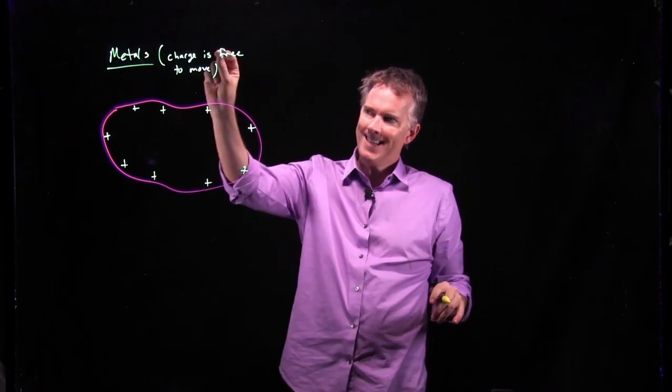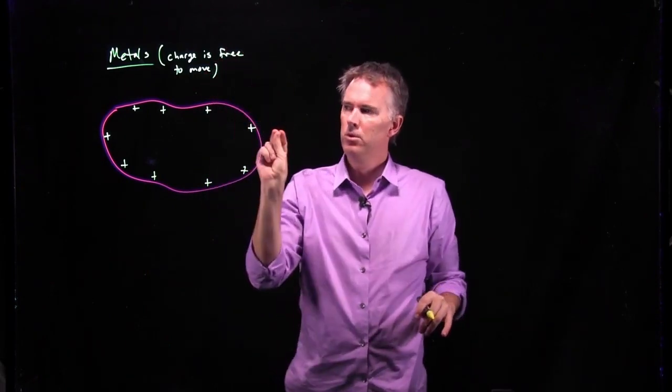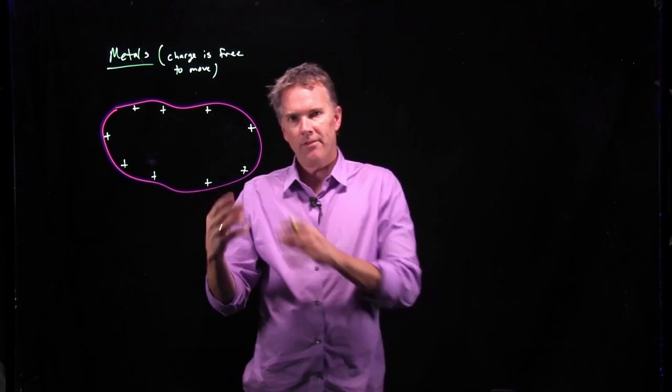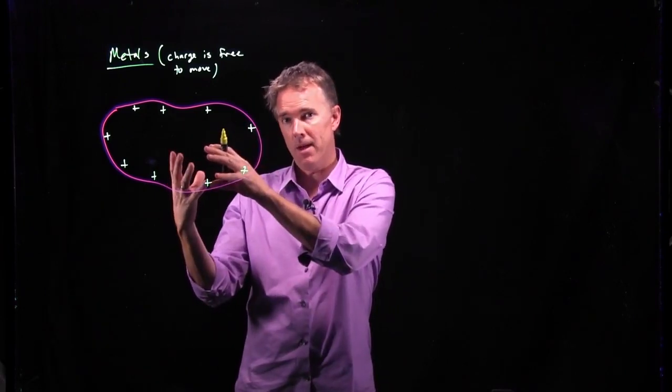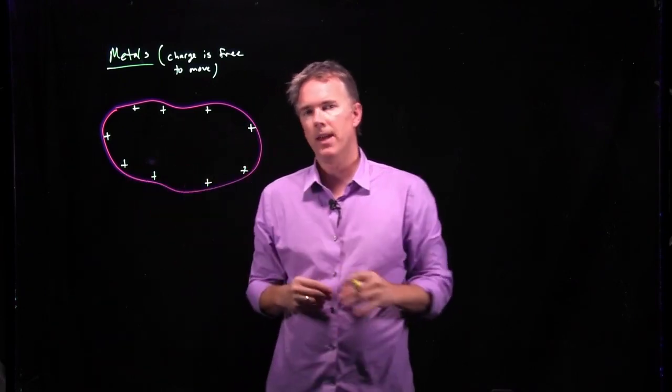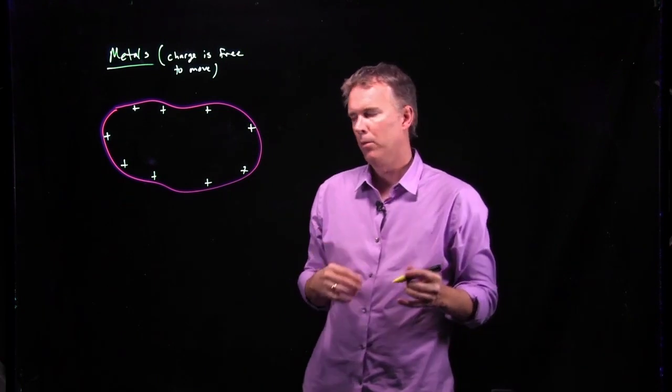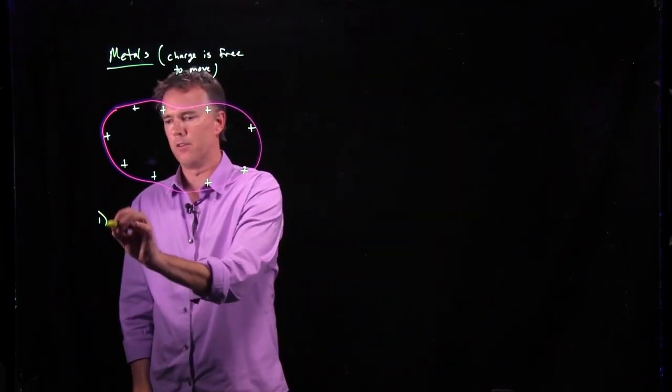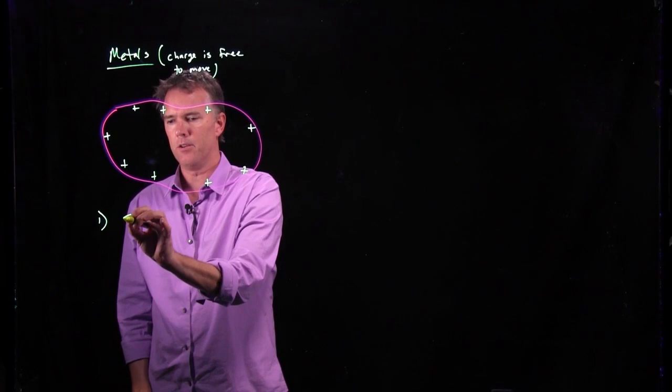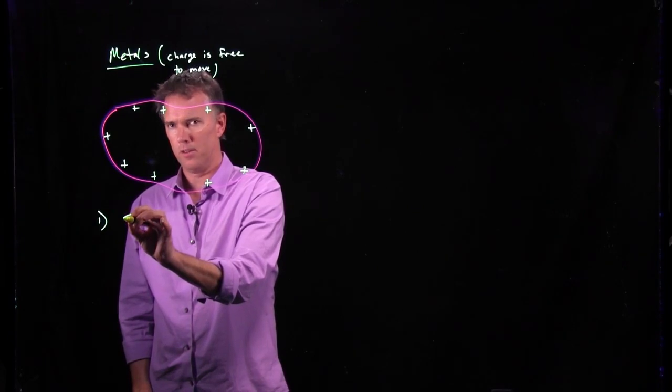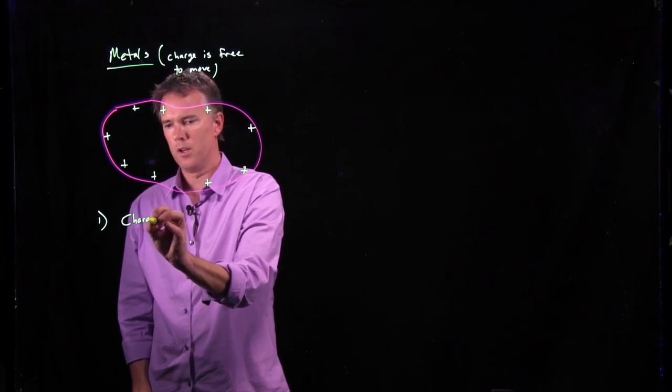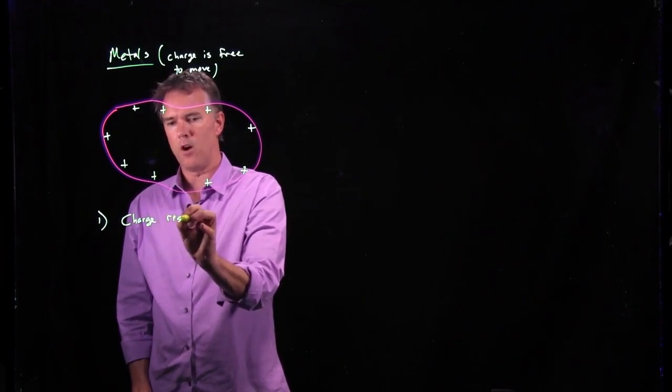So just this simple idea that charge is free to move makes you realize that any charge you put in that metal is going to push out to the edge. And so this is one of the rules of conductors. The E field is causing these charges to move and therefore charge resides on the surface.